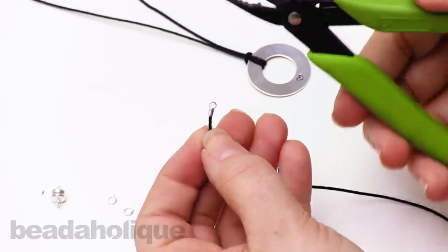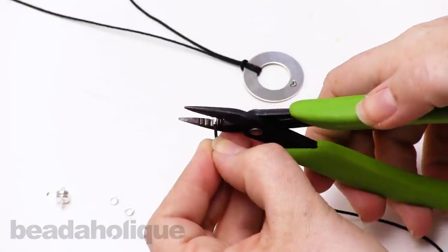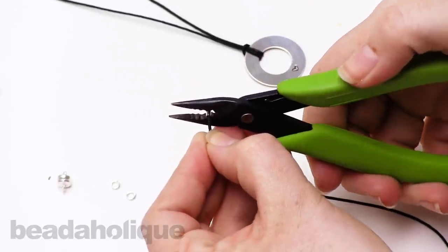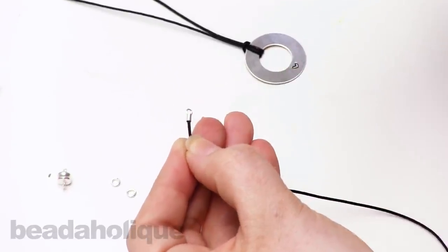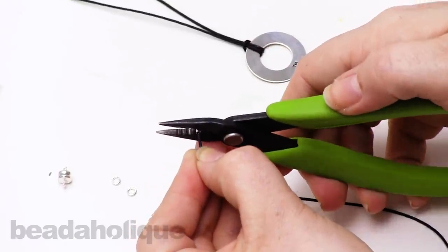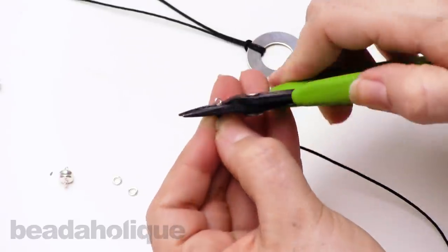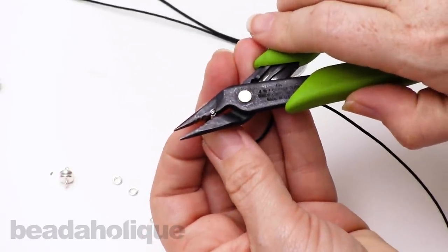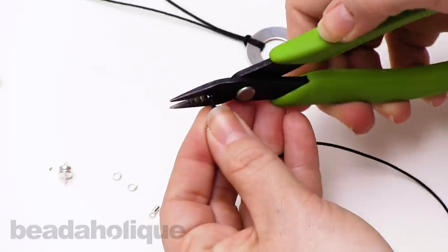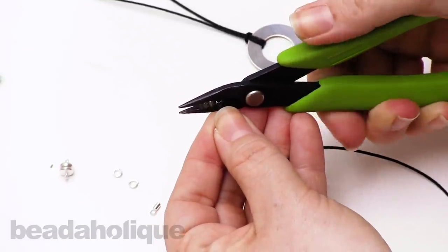And now take your crimping plier and simply set it in there in that very first notch. Make sure your crimpers are facing the right way. You're going to set it into that first notch and make sure that cord is pushed nice and far back. You're not going to push it through that end. So make sure it's really nice and tight. So you make your first crimp.